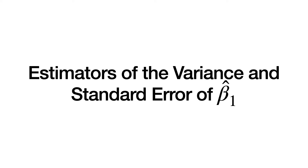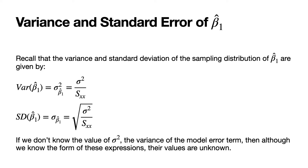Let's look first at studentizing beta 1 hat by reviewing the form of the estimators of the variance and standard error. The variance of beta 1 hat is equal to sigma squared divided by S sub xx — that is, the variance of the model error terms divided by the corrected sum of squares of the explanatory variable x. The standard deviation of the sampling distribution of beta 1 hat is the square root of sigma squared over S sub xx. Now, if we don't know the value of sigma squared, then although we know the form of these expressions, their values will remain unknown to us.